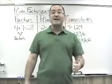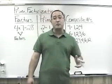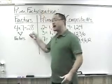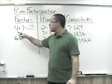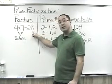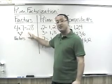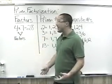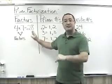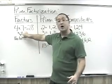First, we need to make sure that we understand factors, prime numbers, and composite numbers in order to be able to do prime factorization. Let's talk about factors. Factors are the numbers that you multiply together to make another number in a multiplication problem. For example, 4 times 7 equals 28. 4 and 7 are factors, and 28 is the product. The answer to any multiplication problem is the product.